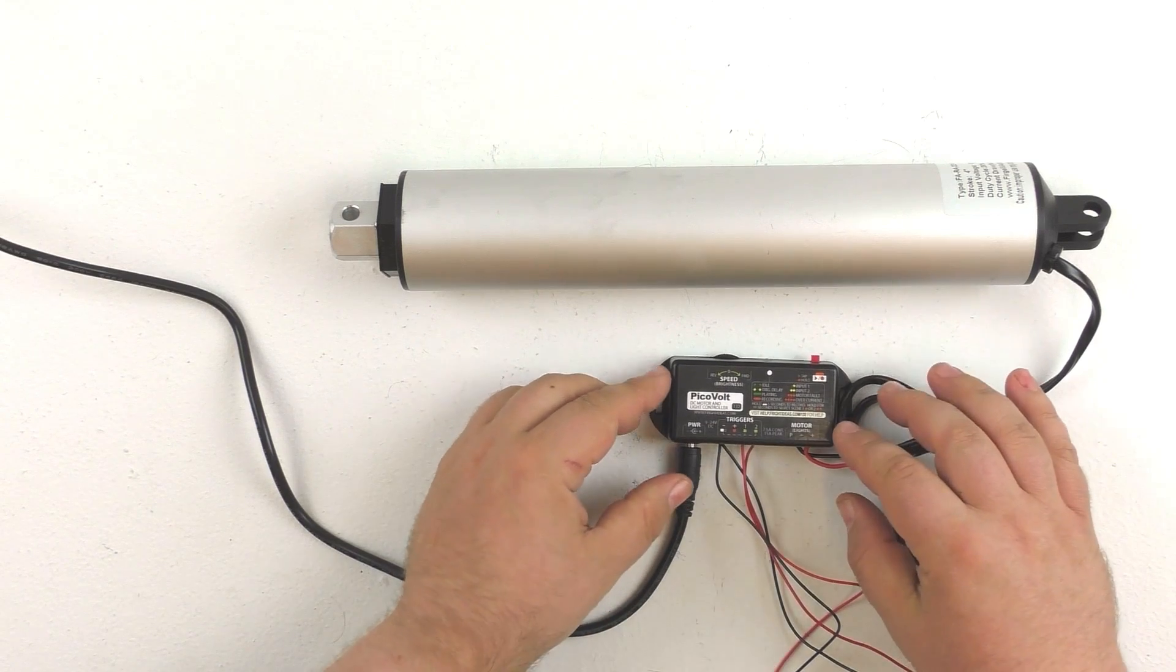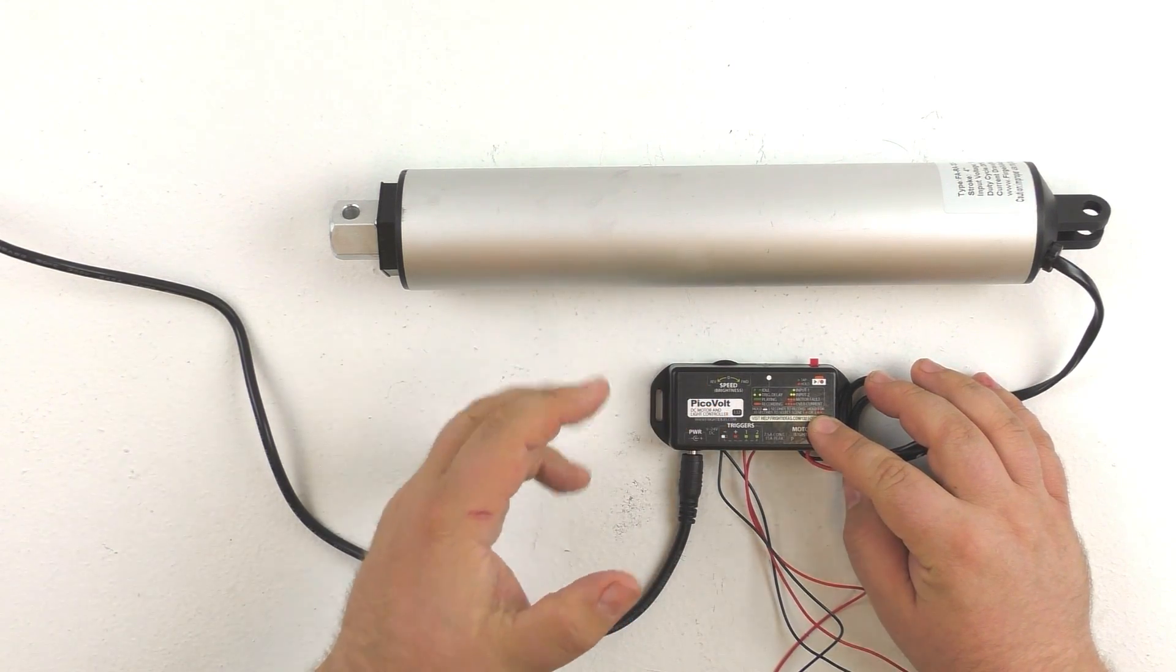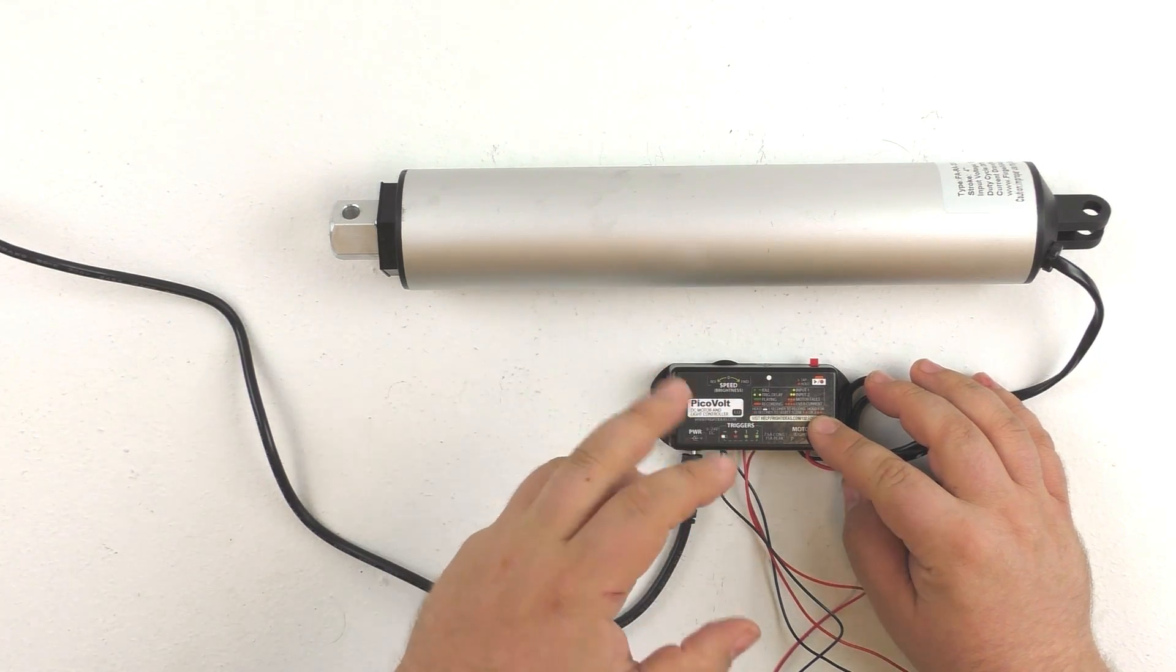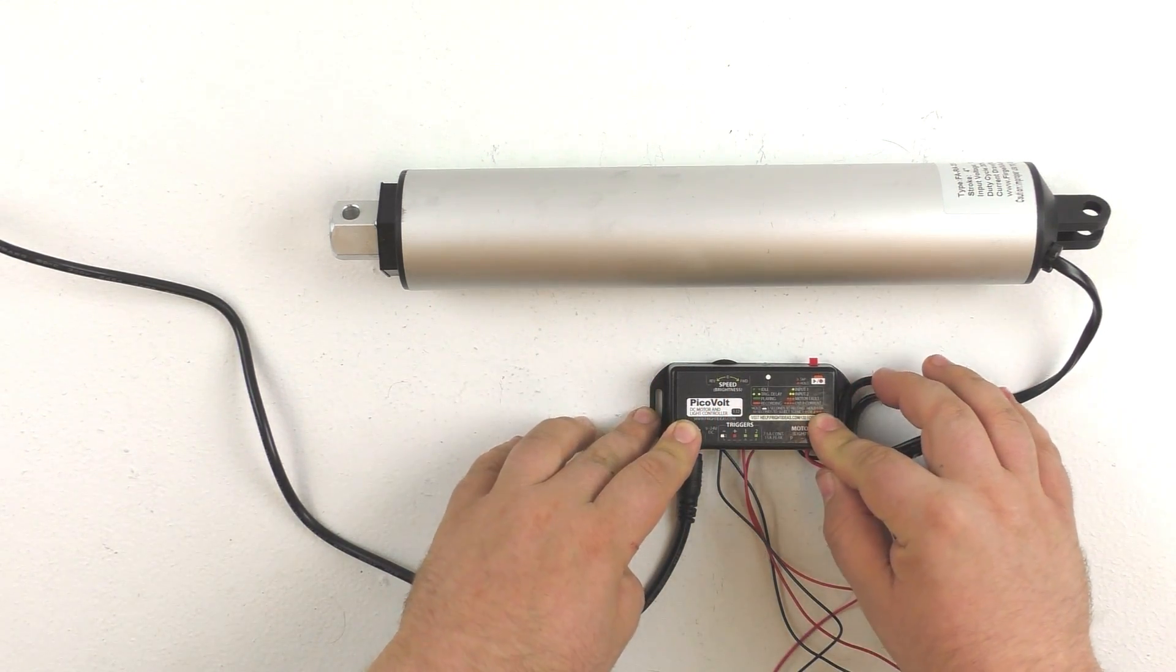If you're new to the PicoVolt it is a motor speed and direction controller. It can also be used for low voltage LED lighting to create lighting effects but today we're gonna be focusing on its abilities as a motor controller.